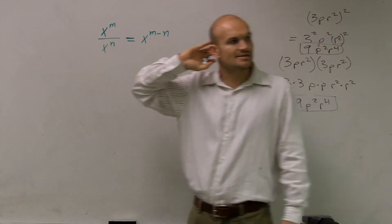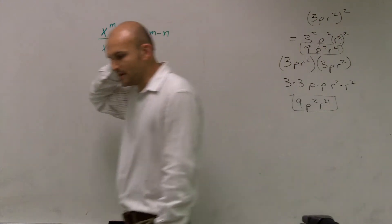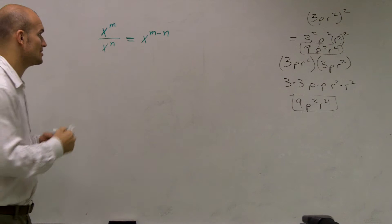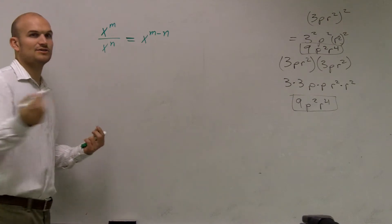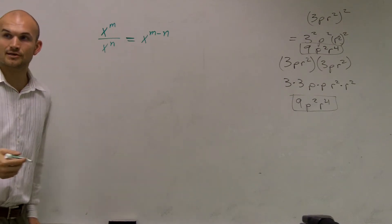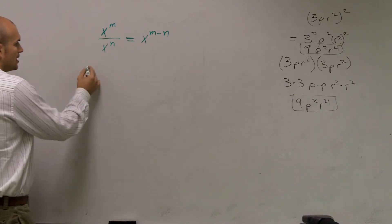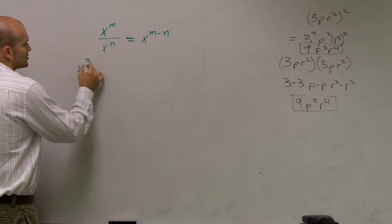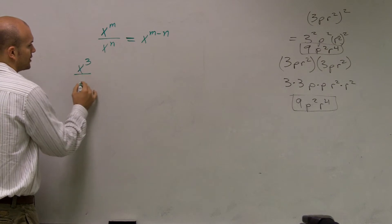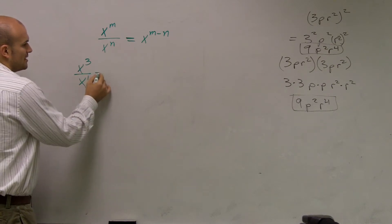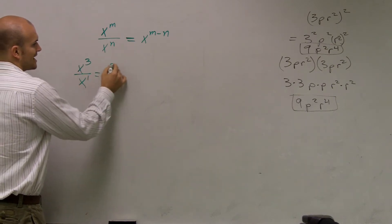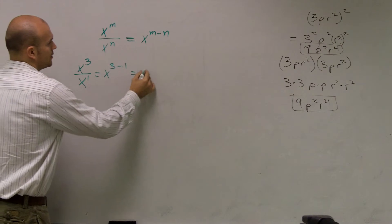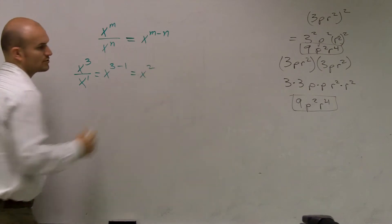So the next thing I want to be thinking about is, well, what happens? If you have x cubed over x to the first, that just equals x cubed minus 1, which equals x squared.